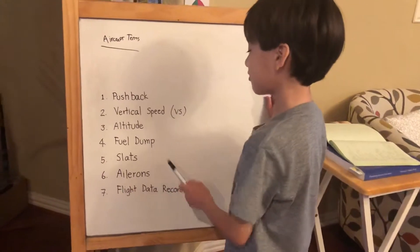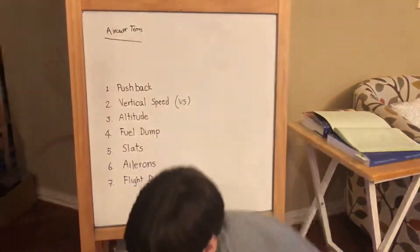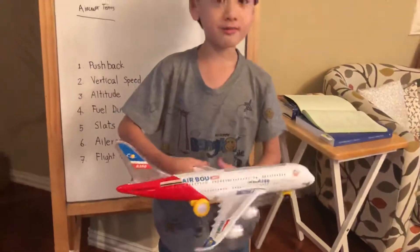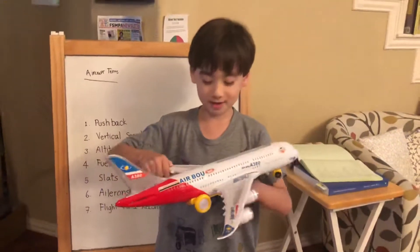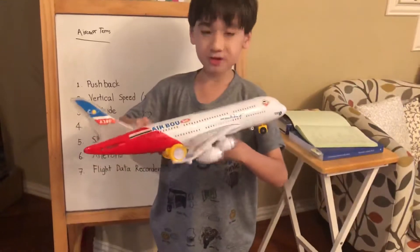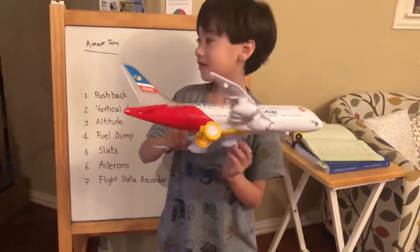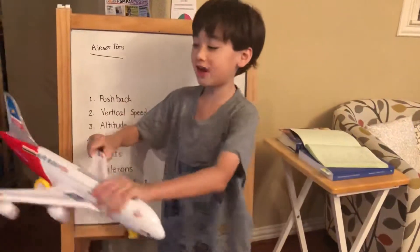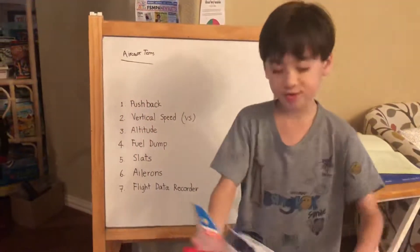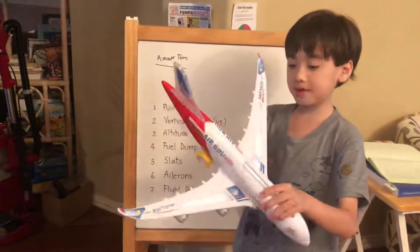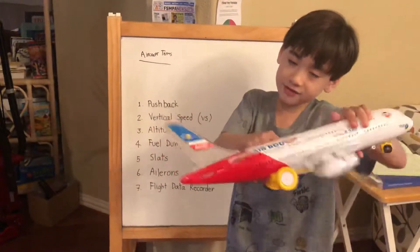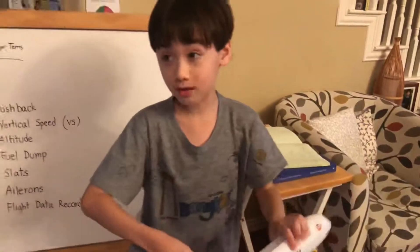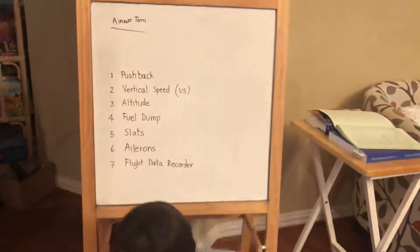We have number four: fuel dump. A fuel dump occurs when the fuel in an aircraft is not performing correctly and must be dumped by the pilots. When they really need to land quickly, they open the tanks in the wings and the fuel dumps out, which is how they get the fuel out.